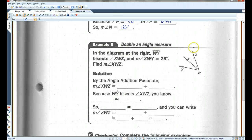Alright. Example 5. Last example. In the diagram at the right, WY bisects, that means it cuts in half, this angle. XWY is 29 degrees. Find XWZ. Okay. So, this is 29 degrees, and it's bisected. So, this is also 29 degrees. By the angle addition postulate, the measure of angle XWZ equals the measure of angle XWY, plus the measure of angle YWZ. Remember, the W has to be in the middle because the W is the vertex. Because it bisects XWZ, we know.